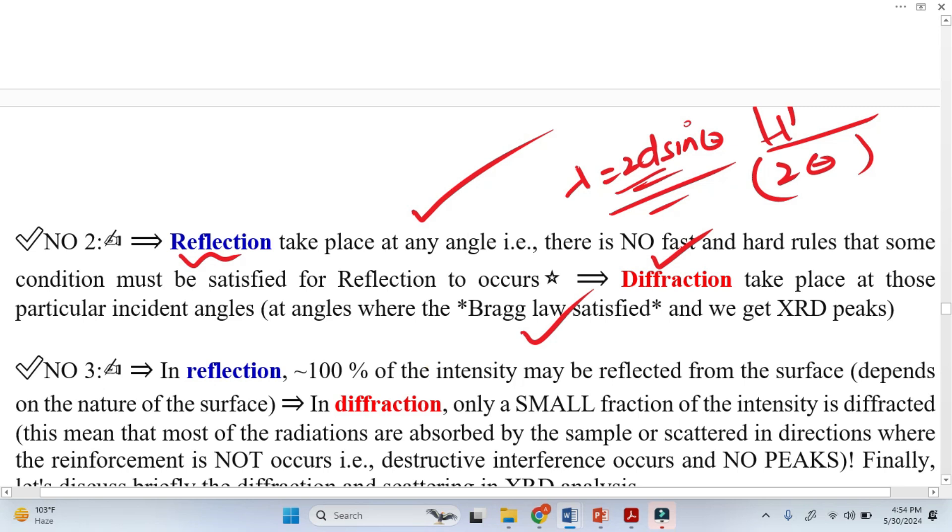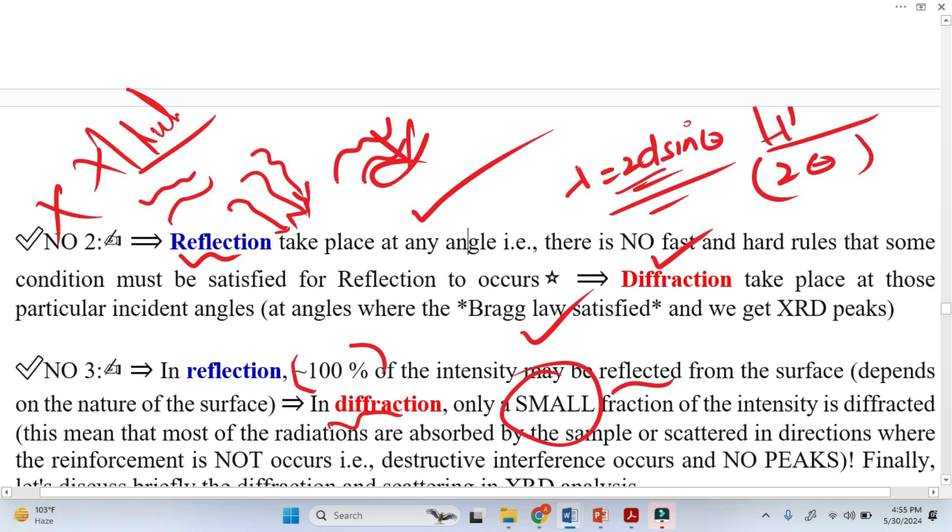The third one is very important. In reflection, 100% intensity may be reflected from the surface, depending on the nature of the surface. While in diffraction, only small fraction of the incident intensity is diffracted. Most of the X-rays scatter from the planes and they cancel the effect of each other and we don't get peaks. We only get peaks when the scattering X-rays reinforce each other.